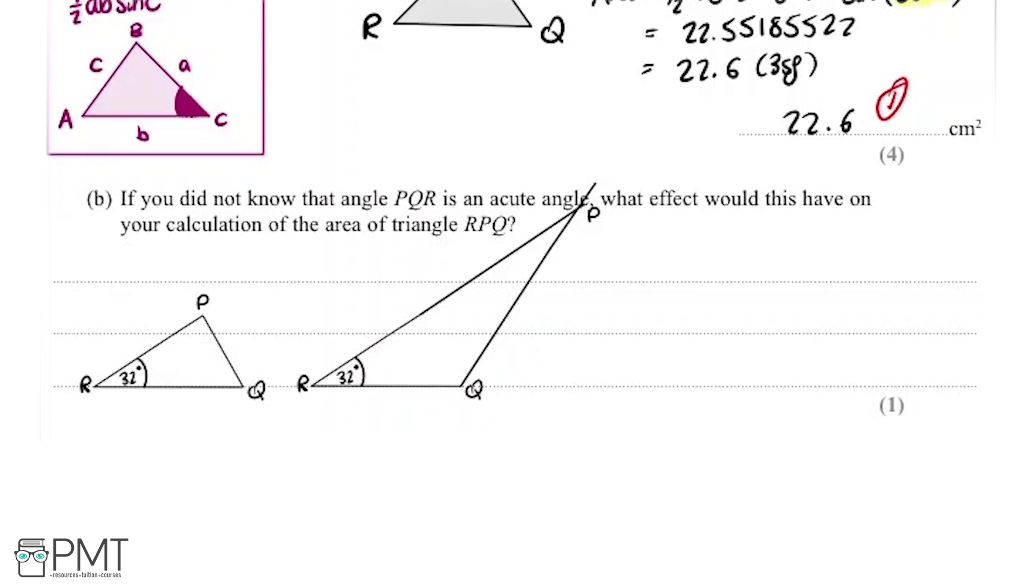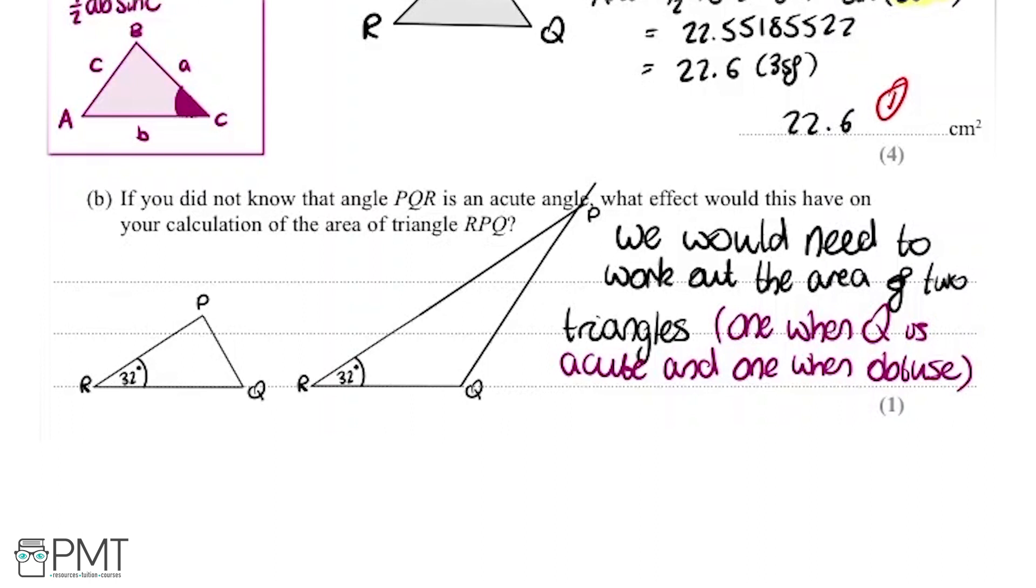You see, this angle stayed the same, but P has got much smaller up here, and Q has got bigger, so things have changed around. As you can see, the area of the triangle has also changed. So essentially, what the question is getting at, if we didn't know that the angle was acute, so if we didn't know the triangle was this one, it could have been either of them. So what we need to do to get the mark for this question is just write out, we would need to work out the area of two triangles.